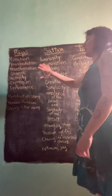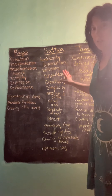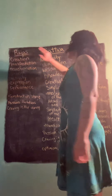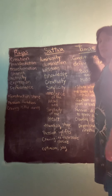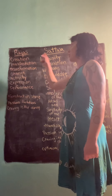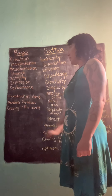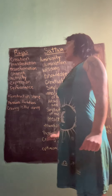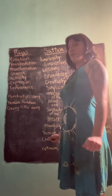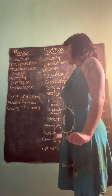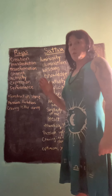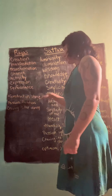First, we're going to start with the general qualities of each guna. So we've got rajas, sattva, and tamas. Rajas is responsible for creation, manifestation, transformation, change, activity, expression, and performance. Rajas is your construction stage.